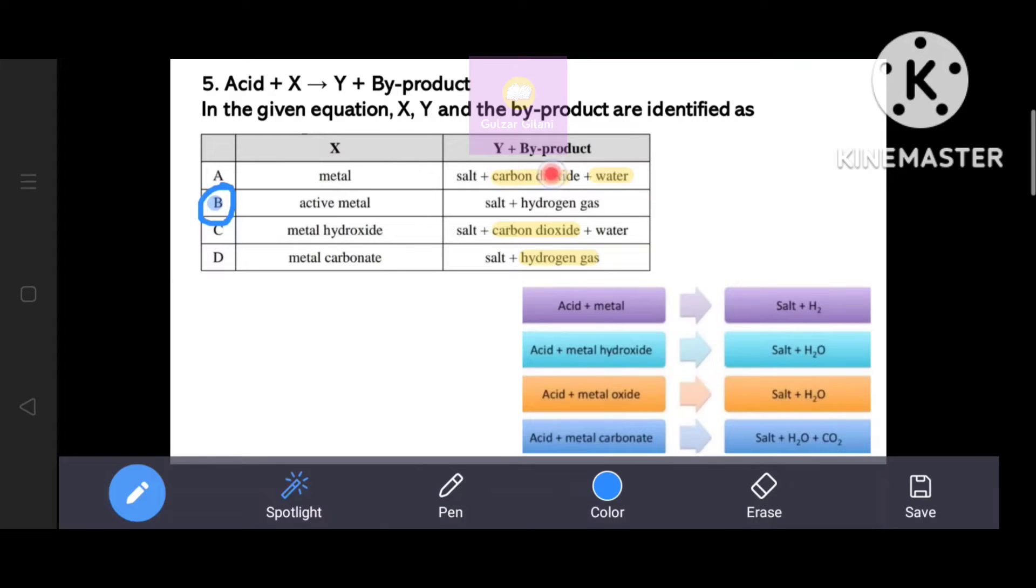Option A, carbon dioxide and water is incorrect. When acid reacts with metal, carbon dioxide and water does not form. Acid reacts with metal hydroxide to form salt and water. Option C, salt plus carbon dioxide and water, here carbon dioxide is incorrect. Acid reacts with metal carbonate to form salt, water and carbon dioxide. Option D, hydrogen gas is incorrect. It should be water and carbon dioxide. Option B represents the correct equation.